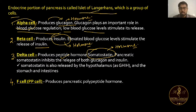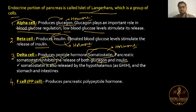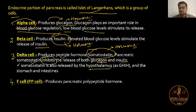Pancreatic somatostatin inhibits the release of both glucagon and insulin. Somatostatin is released from delta cells. When too much glucagon and insulin are produced, somatostatin inhibits them. Somatostatin is also released by the hypothalamus, stomach, and intestine.